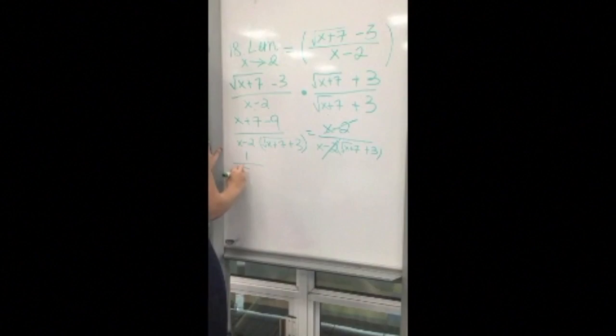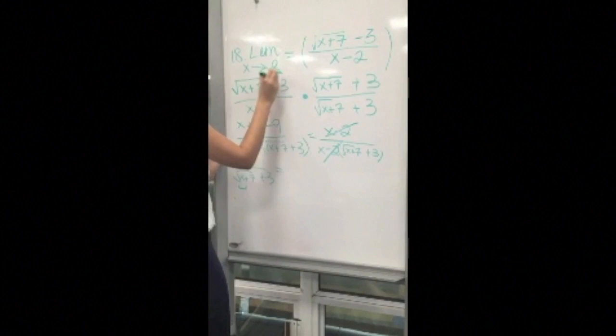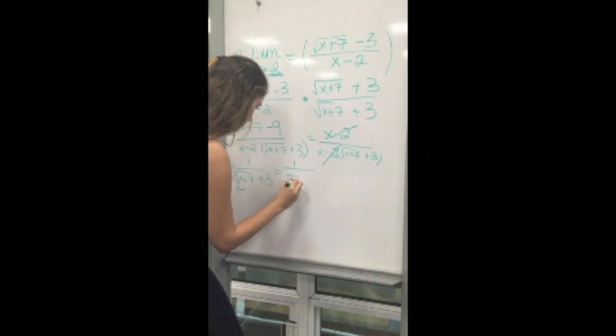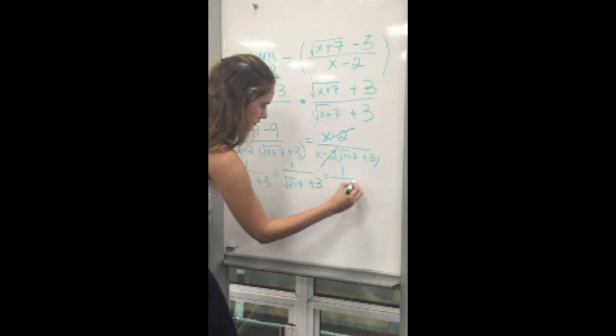The next step is to substitute your x's, which in this case is x when it approaches 2. So you have 1 over square root of 2 plus 7 plus 3, which simplified is 1 over square root of 9 plus 3.